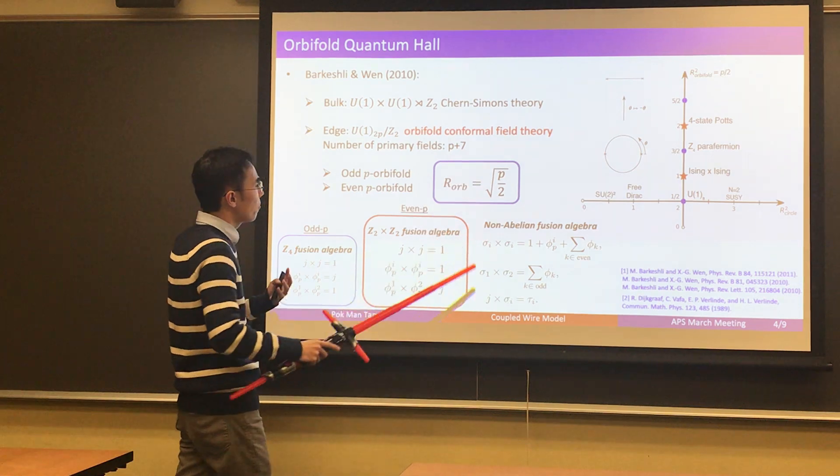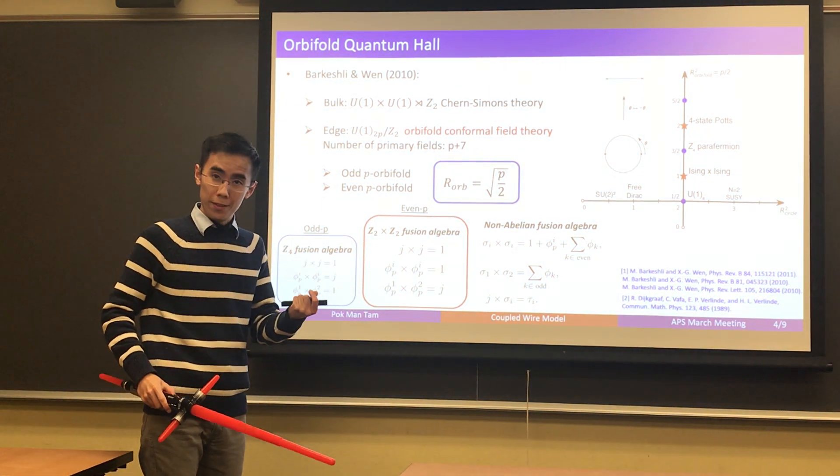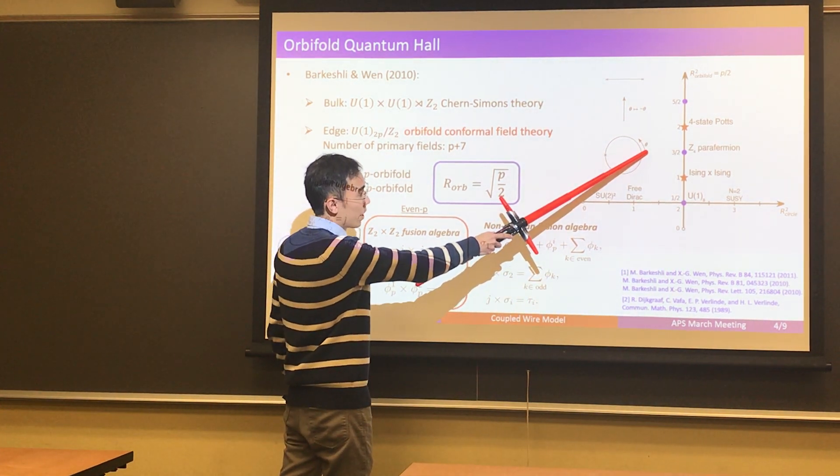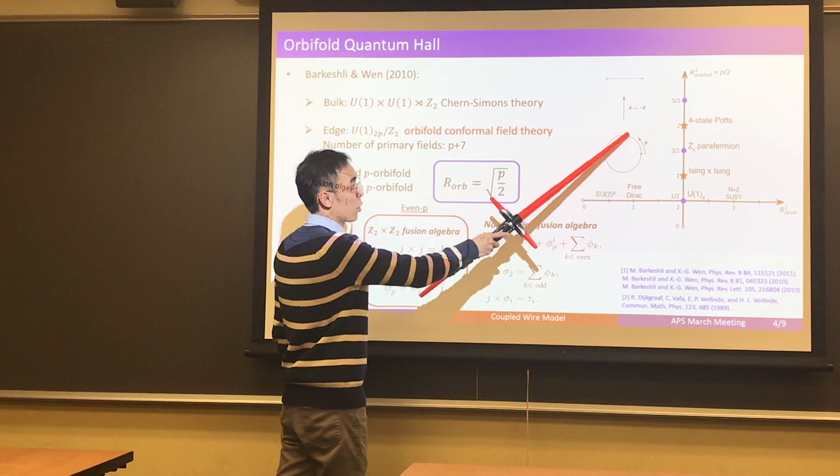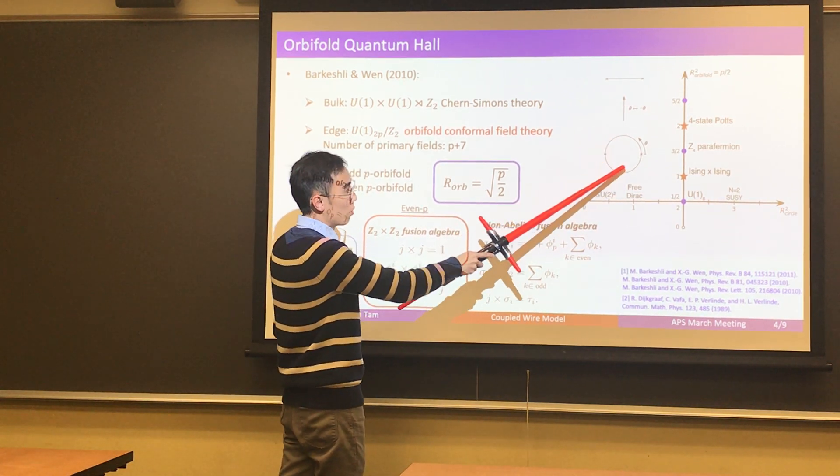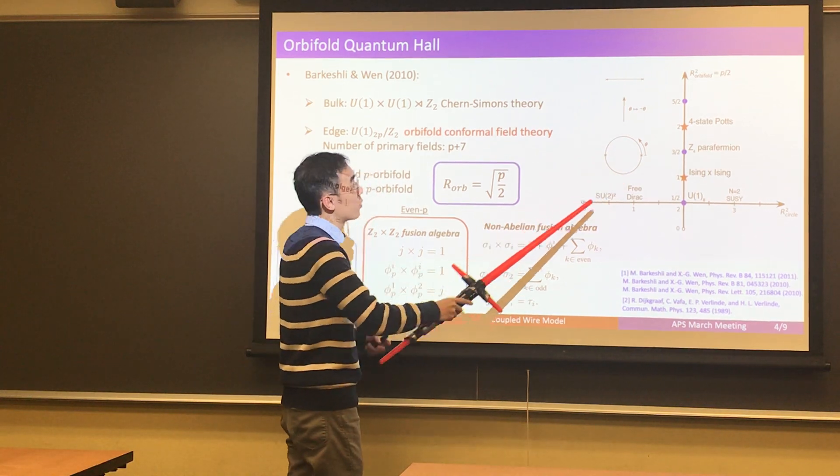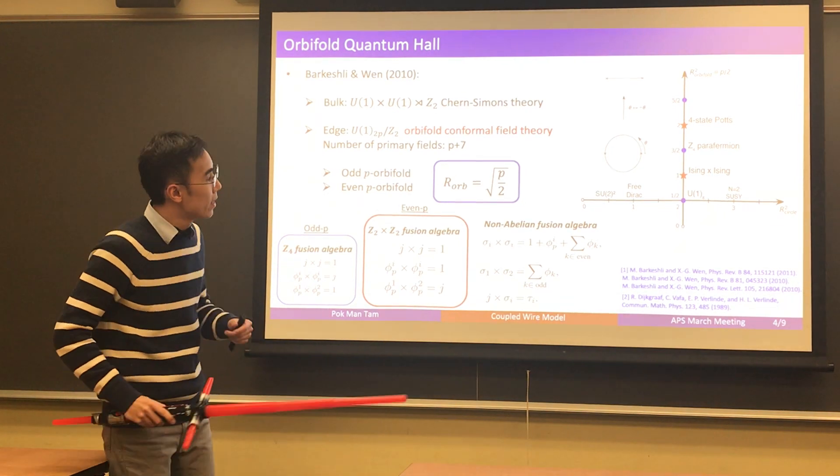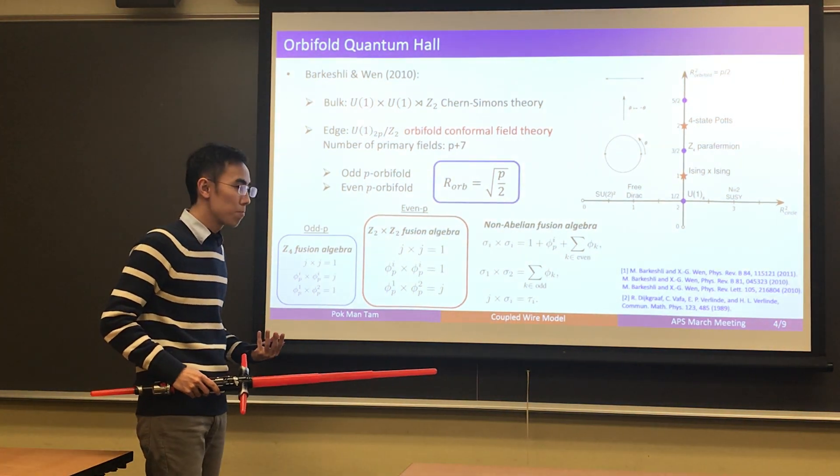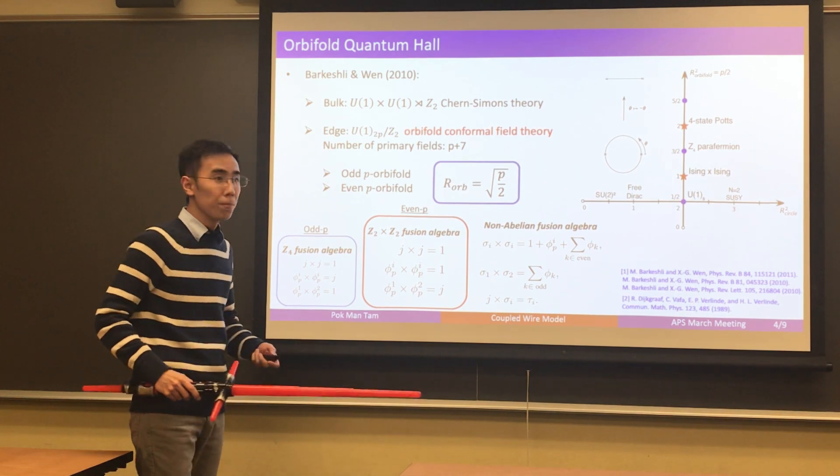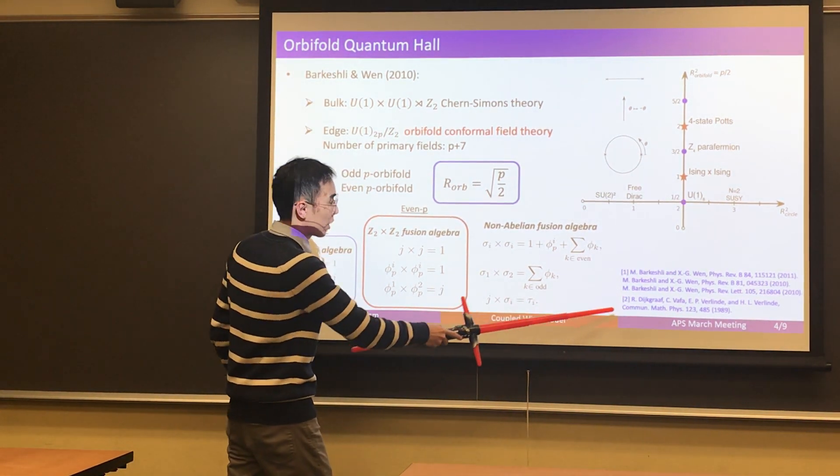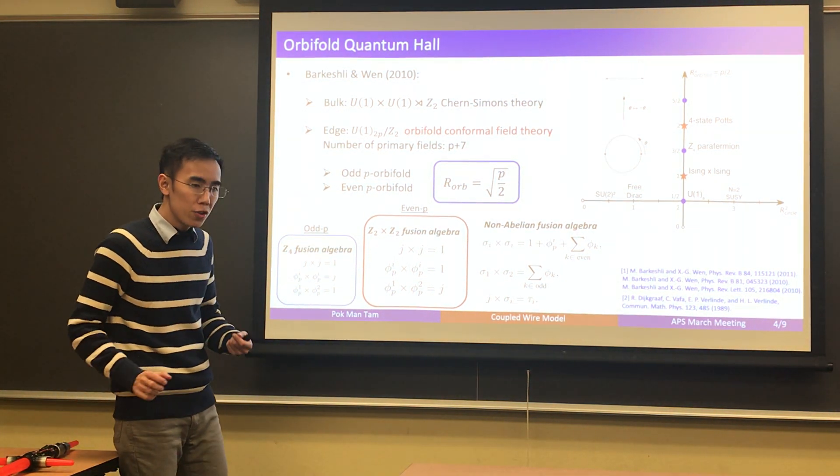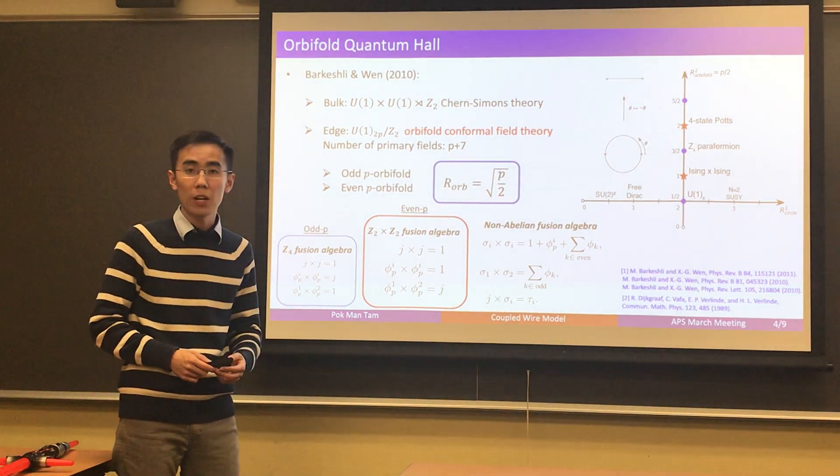To understand what an orbifold conformal field theory is about you can think about what is a U(1) conformal field theory, the circle theory which describes a scalar field theta that is compactified on a circle. Now if you look at the circle it has a Z2 reflection symmetry that brings theta to minus theta. If you gauge that symmetry you would obtain the U(1)/Z2 orbifold CFT. The subject of orbifold conformal field theory actually has pretty long history. This is a seminal paper on this subject so I'm not going to talk too much about the details of this subject